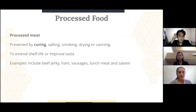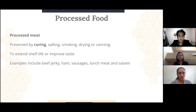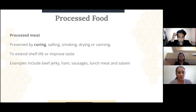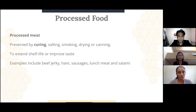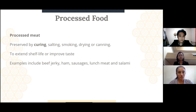Our group has decided to choose processed meats for this presentation. Processed meats are preserved in several ways such as curing, salting, smoking, drying, or canning. We will be focusing on cured meats in particular. Processed meats are typically processed to extend shelf life or improve taste. Examples include beef jerky, ham, sausages, lunch meat, and salami.